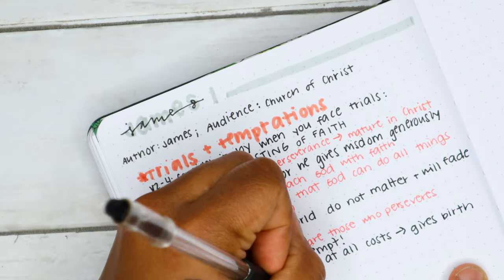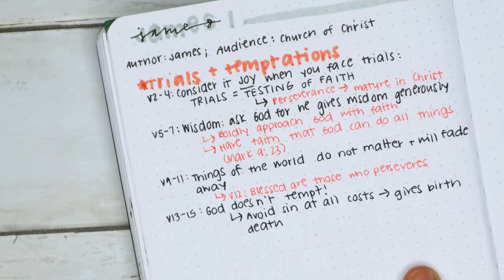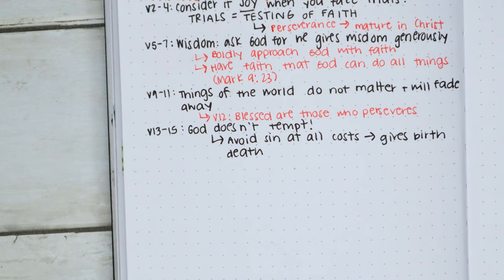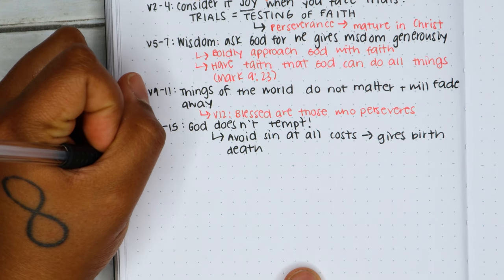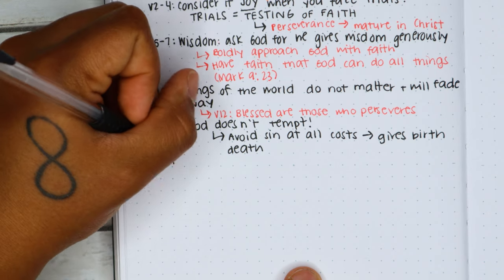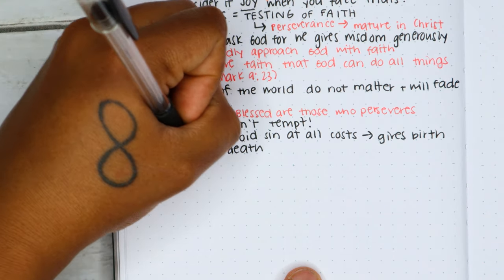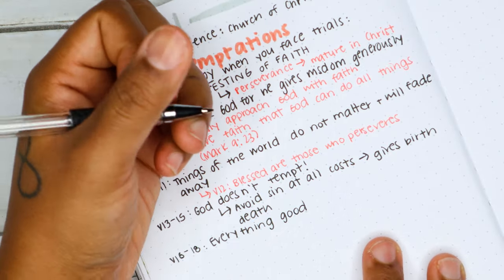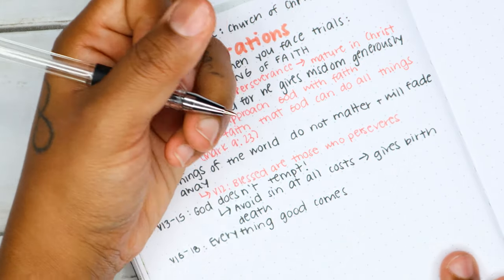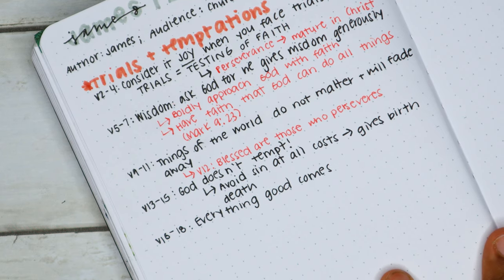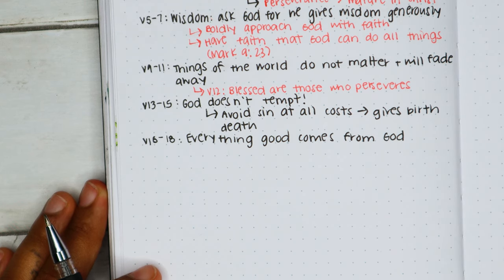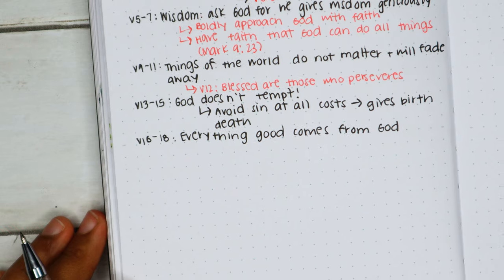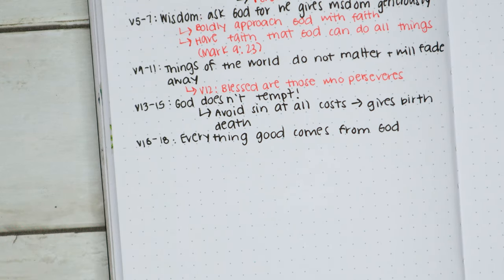God is life, so giving birth to death is the opposite of Jesus and producing good fruit. On the other hand, verses 16 through 18 say every good and perfect gift comes from above — everything good comes from God. Have you ever been tempted to sin, and then you don't, and you get that good feeling? I'm so grateful that God doesn't change. Imagine having a God that was constantly changing — but he is always the same in a world where everything around us is always changing.